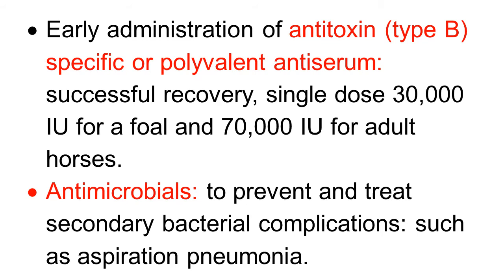Early administration of antitoxin — specific type B, or polyvalent anti-serum type C and D — is recommended. Successful recovery has been observed with a single dose of 30,000 international units for foals and 70,000 international units for adult horses. Antimicrobial drugs should be given to prevent secondary bacterial infection and to treat complications such as aspiration pneumonia, which is a very common complication of botulism in horses due to paralysis of the respiratory muscles, facial muscles, and neck muscles.